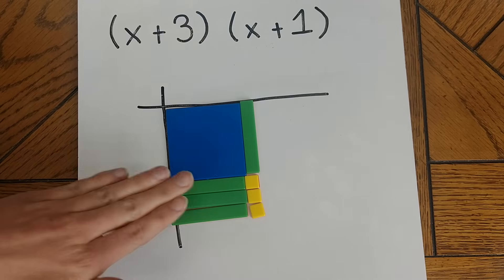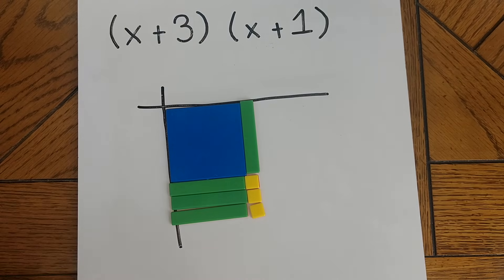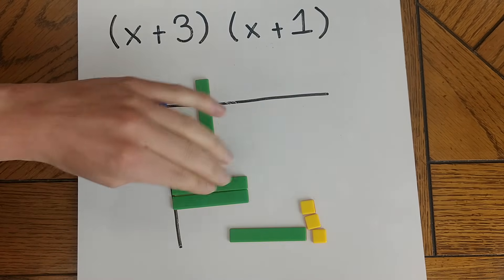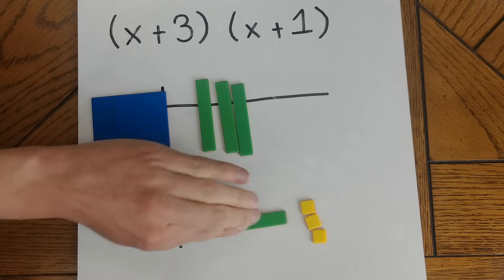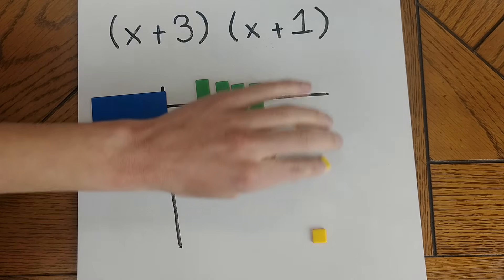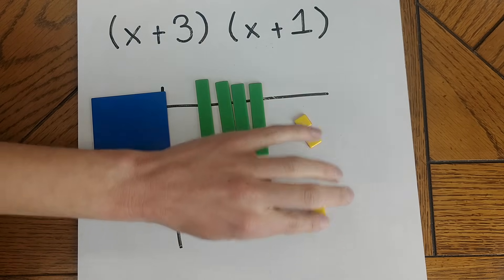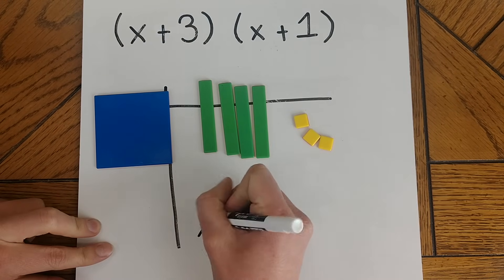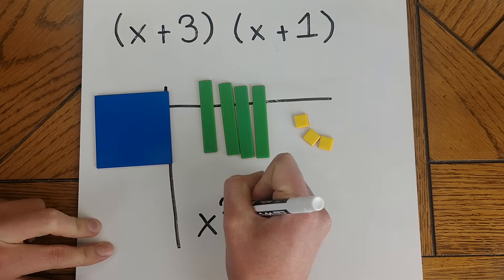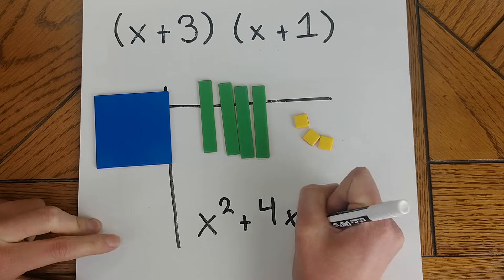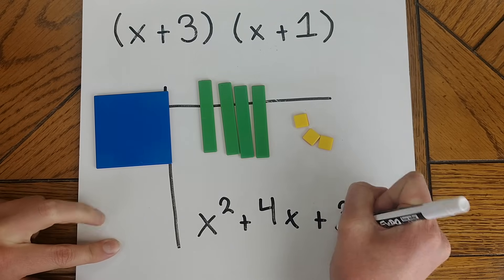All I have to do is combine the like terms here. So I have an x squared, I have four x's, and I have three units. This gives me a combined final answer of x squared plus 4x plus 3.